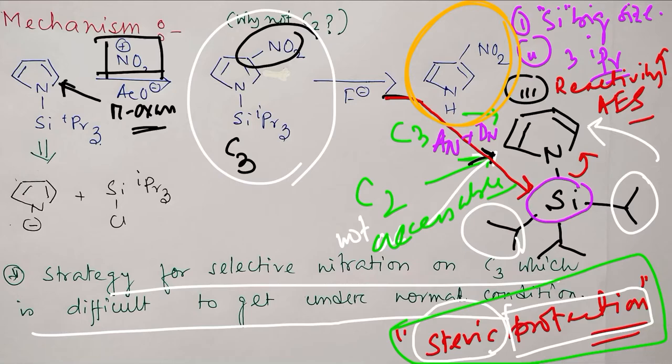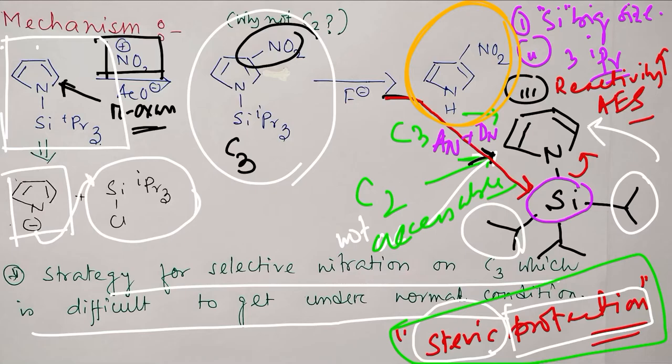When discussing this, how is this silylated pyrrole prepared? Simple: from pyrrole anion and triisopropyl silyl chloride, which attacks the silicon center via AN plus DN mechanism, and ultimately Cl leaves.